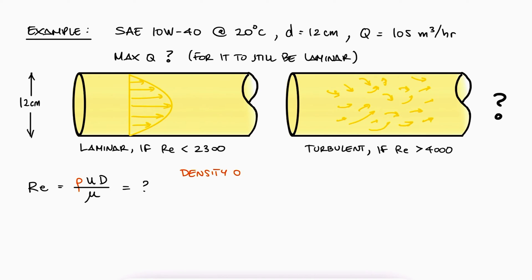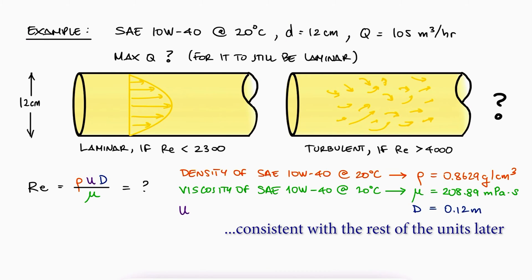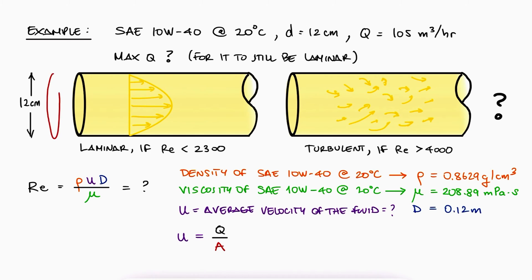First, we need the density of the oil at 20°C, which we can look up online, and we do the same for its viscosity. The pipe diameter is 12 cm or 0.12 m to keep units consistent. Finally, we need the average velocity, which we find by dividing the volume flow rate Q by the pipe's cross-sectional area.